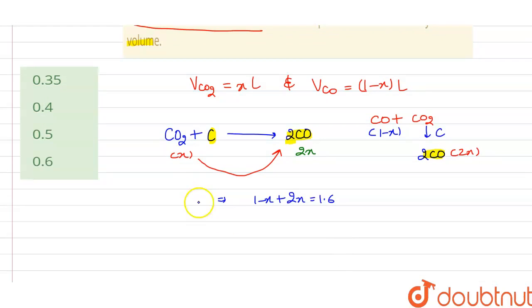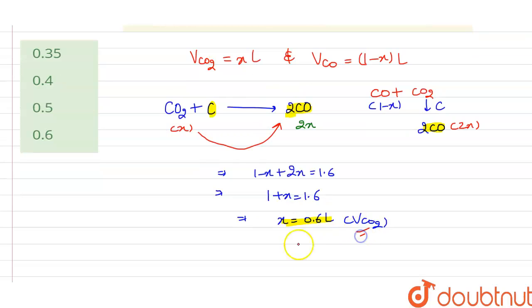So here it will be 1.6 liter. So on solving it, what we will get is 1 minus x plus 2x is equal to 1.6. So on solving it we get the value of x as 0.6 liter as the volume of CO2.